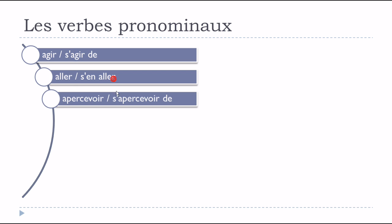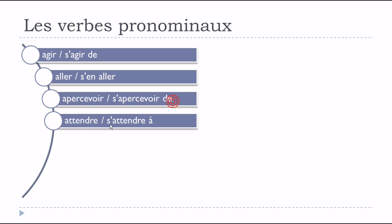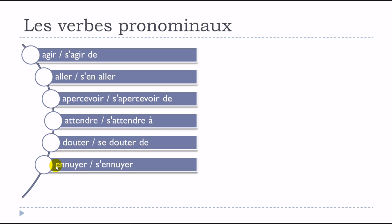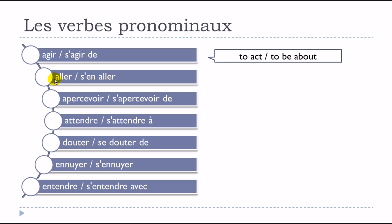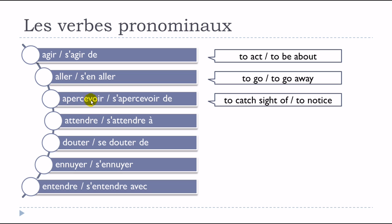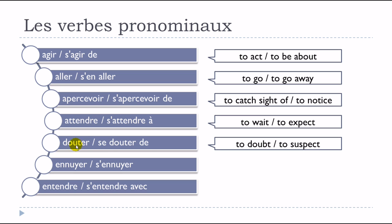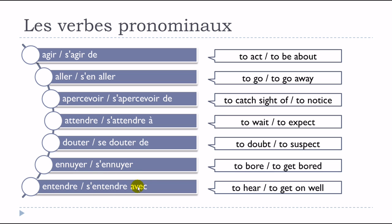Here is a list of verbs with both forms where the meaning differs: agir / s'agir de, aller / s'en aller, apercevoir / s'apercevoir de, attendre / s'attendre à, douter / se douter de, ennuyer / s'ennuyer, entendre / s'entendre avec. Agir means 'to act' and s'agir de means 'to be about.'